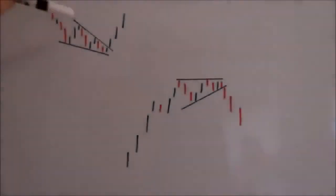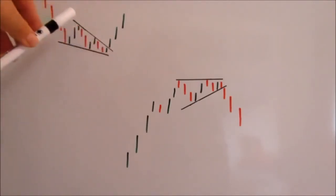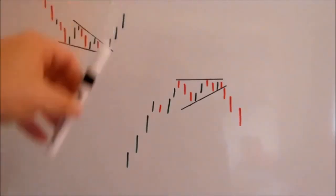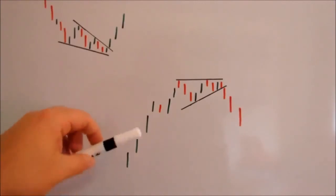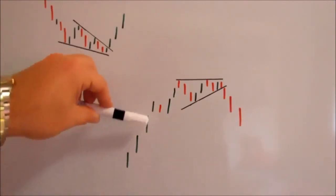And now what they don't tend to teach you is what happens when you get a wedge that is pointing in the same direction as the trend preceding it. Often these little patterns will prove to be reversal patterns. So that if you get a wedge that is pointing down in a downtrend, look for upside breaking, and a wedge that is pointing up in an upmarket will often break on the downside.